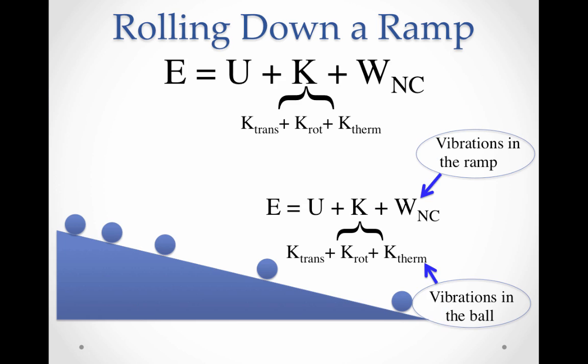Rolling down a ramp. We have our ball here rolling down the ramp — let's look at this system. Here is our non-conservative conservation of energy mathematical model.